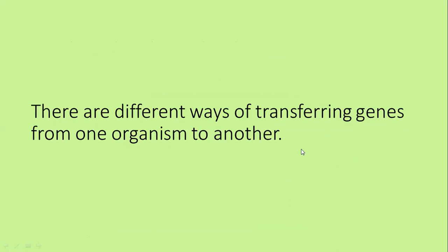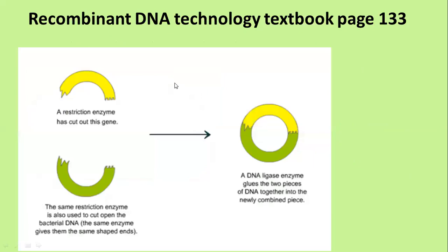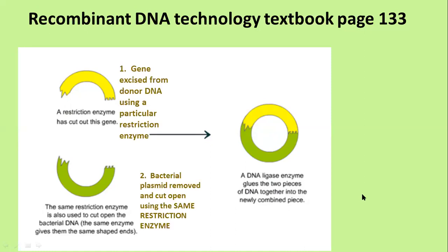There are different ways of transferring genes from one organism to another. The first method of gene transfer is using bacterial plasmids. Bacterial plasmids are often used to transfer genes. The restriction enzyme has cut out the donor gene leaving sticky ends, the plasmid has been taken out of the bacterium and cut with the same restriction enzyme, leaving matching sticky ends. When put together with the ligase enzyme, the ligase joins the two sticky end pieces together. That was described in the previous lesson.